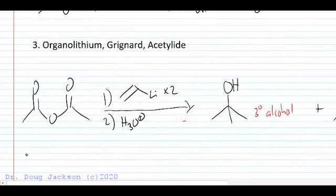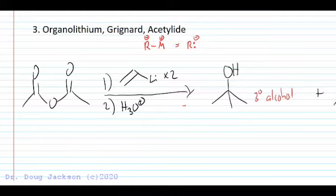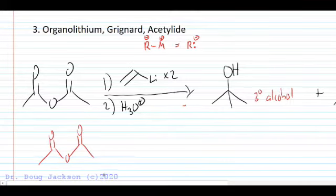We can also add organometallics to anhydrides in the same way we did acid halides. We showed a Grignard with the acid halide; let's show an organolithium here. What makes all three of these similar is that we have a very polar metal to carbon bond, so that we can functionally think of the carbon of our organometallic as being a carbanion—it's got a negative charge on carbon.